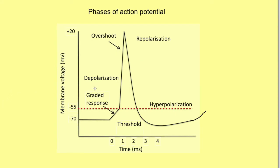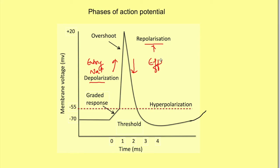One thing to remember: even though depolarization and repolarization are opposite to each other in terms of voltage change, ionically the reasons are different. Depolarization is a change in voltage towards the positive side, and repolarization is a change in voltage towards the resting membrane potential. But ionically, depolarization is due to entry of sodium ions into the cell, while repolarization is due to efflux of potassium ions. So it is two different ions moving in and out.